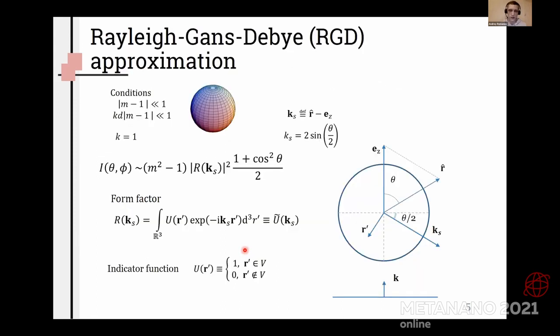And the first step we refer to RGD approximation. In that approximation intensity mostly depends on form factor. It is a Fourier transformation of indicator function of the particle. And as you can see, it already explains the oscillatory behavior of the light scattering pattern. But we will go deeper and try to obtain explicit formulas for that.